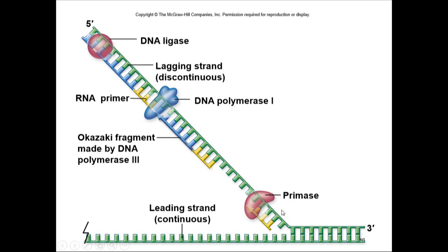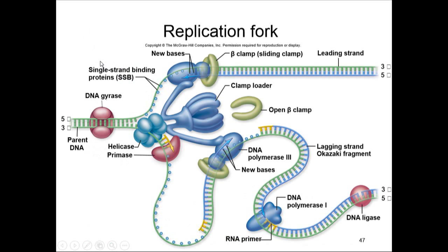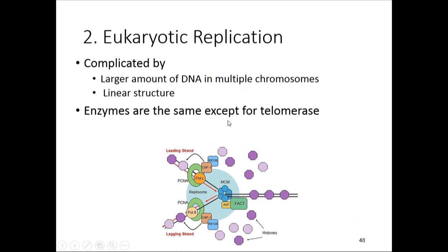To summarize the main enzymes: primase puts on the RNA primer, DNA polymerase adds nucleotides, the lagging strand is synthesized in little chunks while the leading strand is continuous, and then ligase seals the nicks between them. The actual process is more complicated — a large protein complex with clamps guides the whole process — but these are the main players.